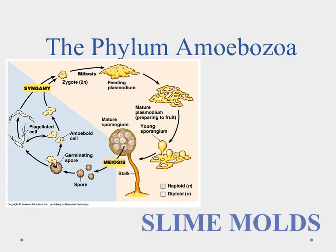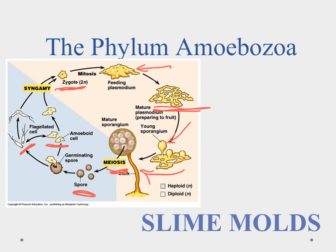The last group of protists are the slime molds, which are neat because they have a duality of life cycles. Meiosis happens and they enter a haploid stage where they form spores. Those spores germinate and form either an amoeboid cell or a flagellated cell. These cells come back together through syngamy to form a zygote, returning to the diploid stage. The zygote undergoes mitosis and becomes a large feeding plasmodium — the slimy, moldy-looking structure. The mature plasmodium then prepares to fruit, forming a spore-producing structure, and meiosis occurs again to continue the cycle.